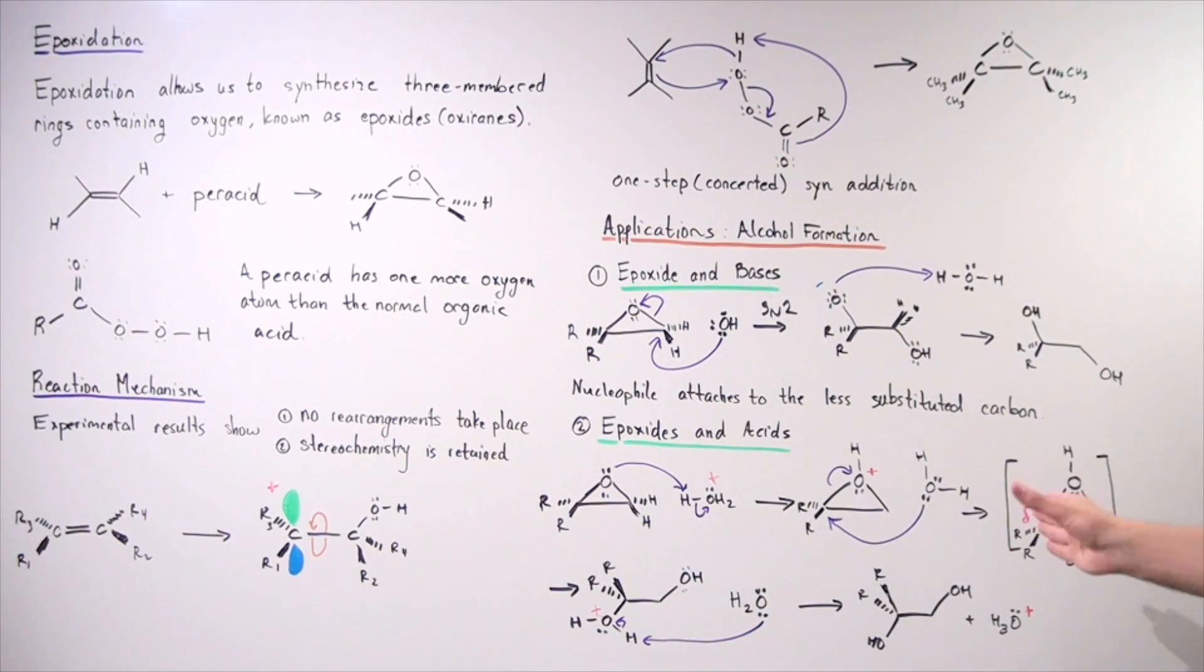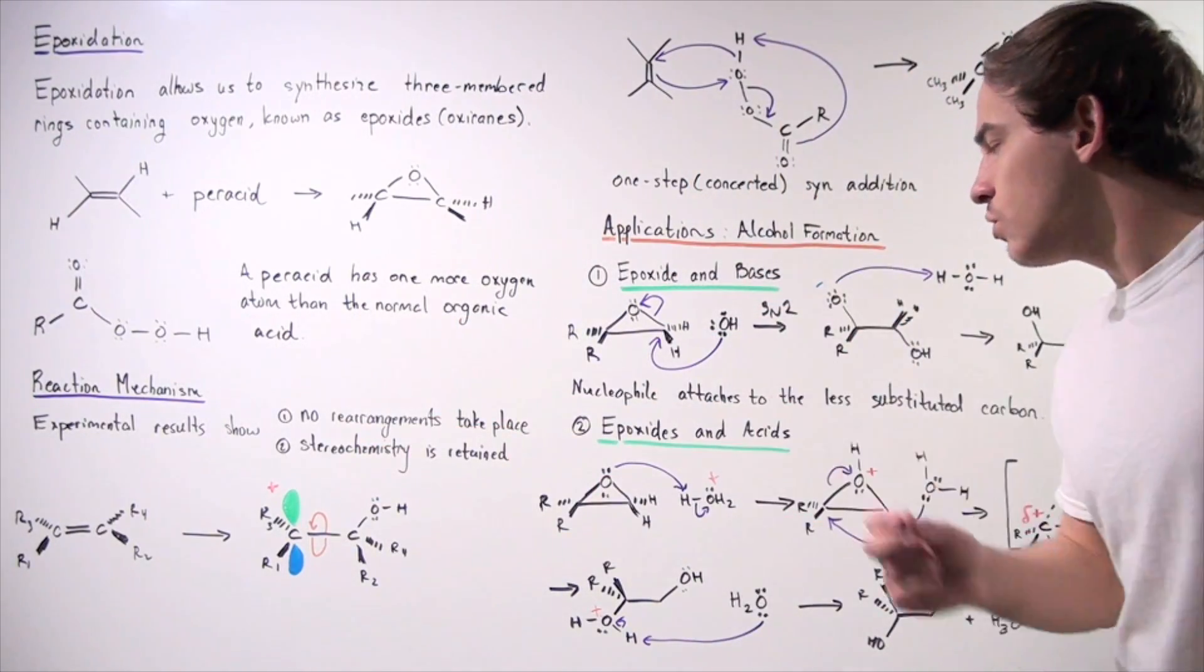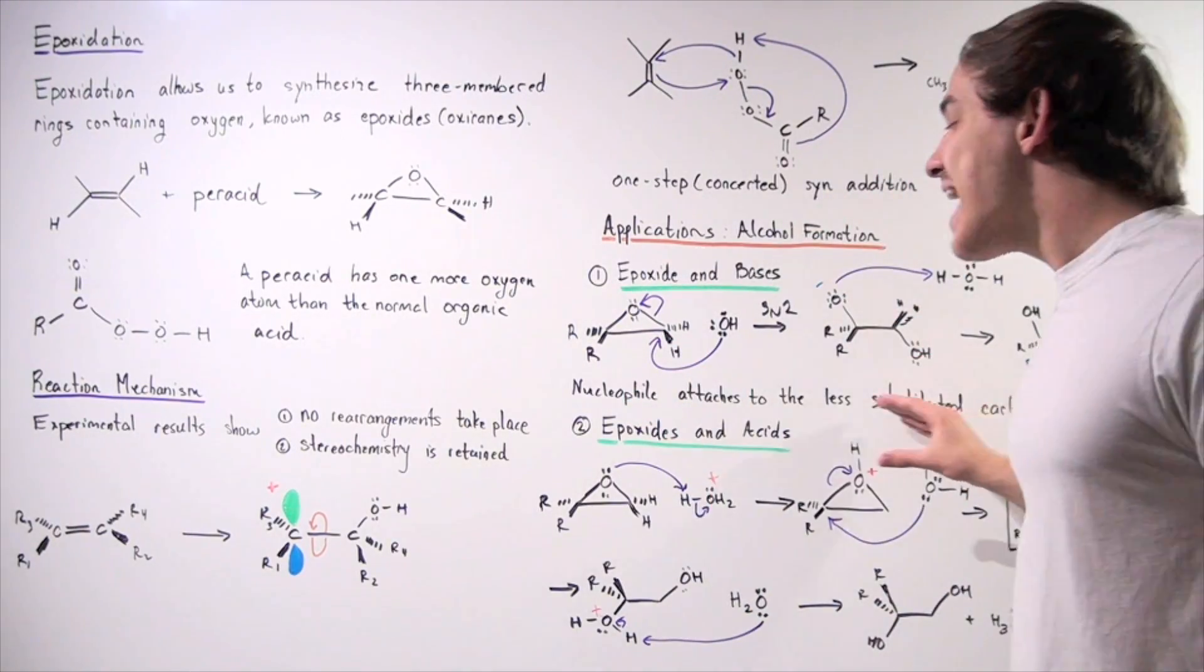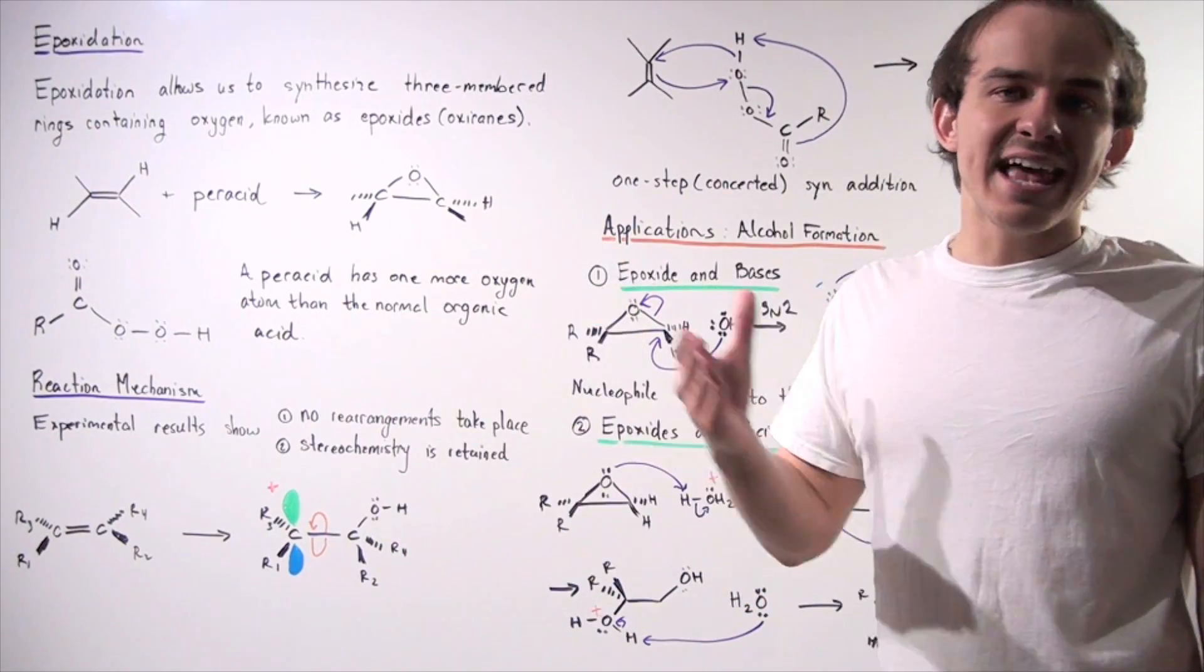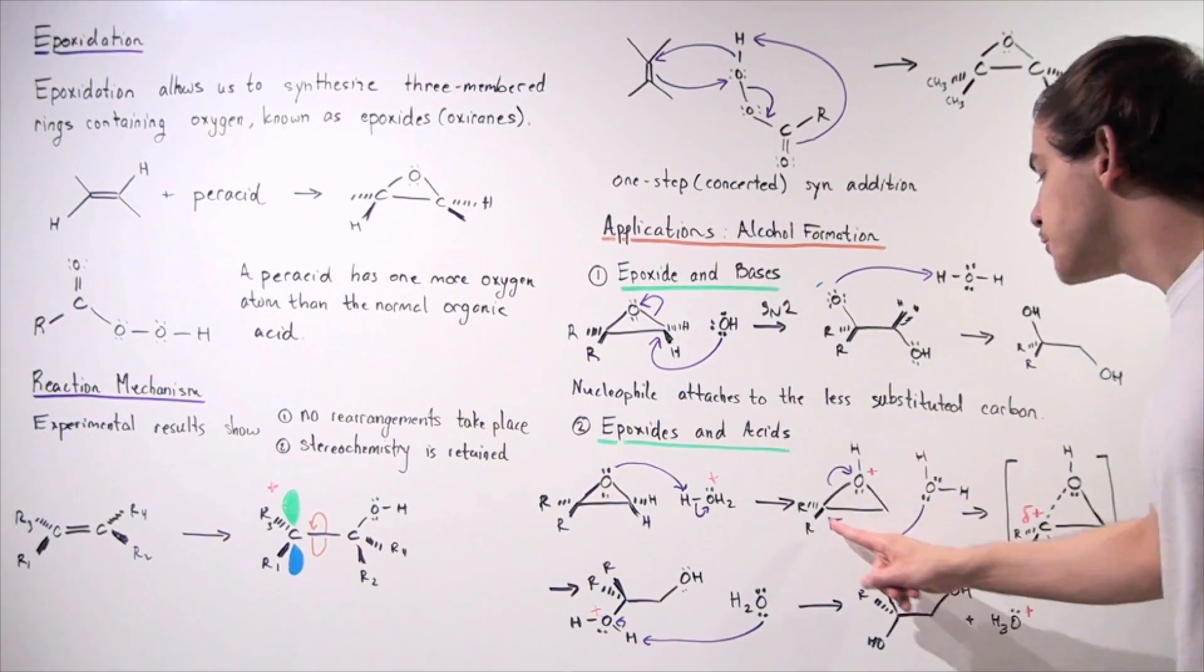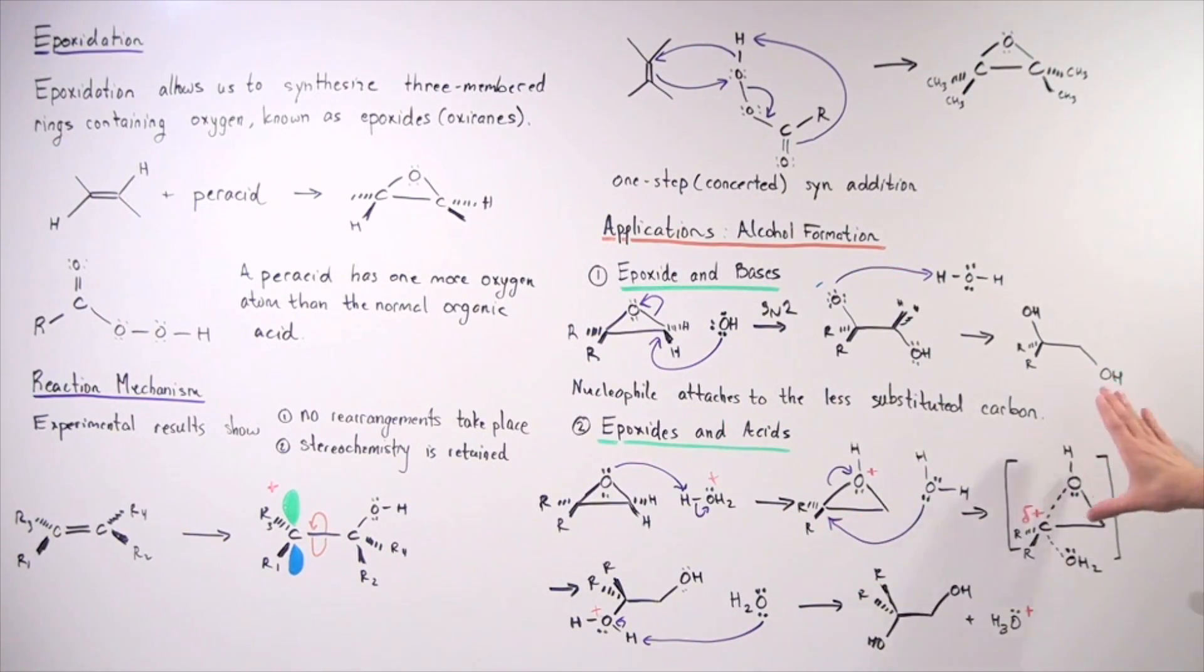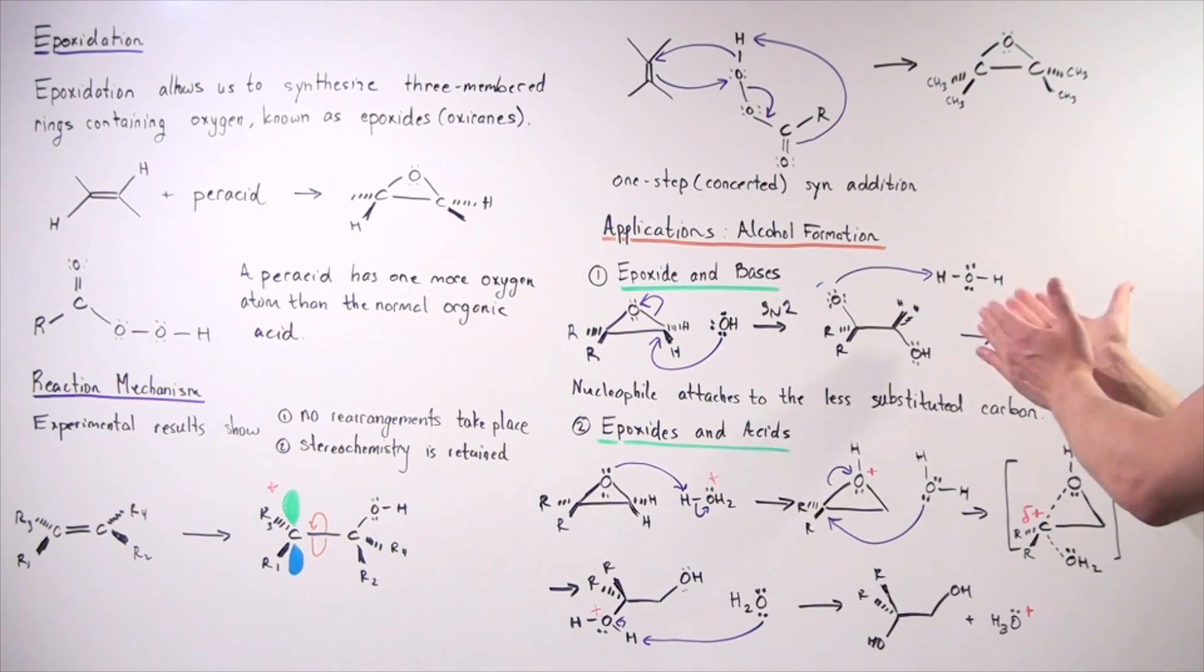Now whenever we have bases mixed with epoxides, we're going to have the base act as a nucleophile, attacking the less substituted side. But in acids, the first step is the protonation step. And in the second step, our nucleophile will attack the more sterically hindered side because that side will stabilize the transition state, the partial positive charge on the carbon in the transition state. So this is a very important difference between bases and acids and mixing bases and acids with epoxides.